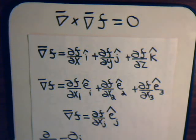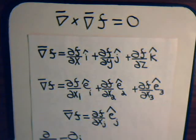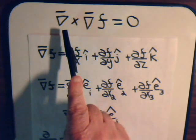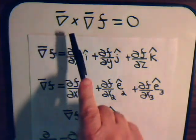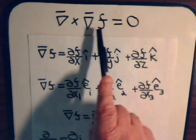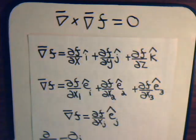In this video, we're going to try and do something a little bit different to give a demonstration of why the curl of a gradient is equal to zero. This is the del operator, and when we take the cross product of anything with the del operator it's a curl. So we're taking the curl of the gradient, and we want to prove it equals zero.